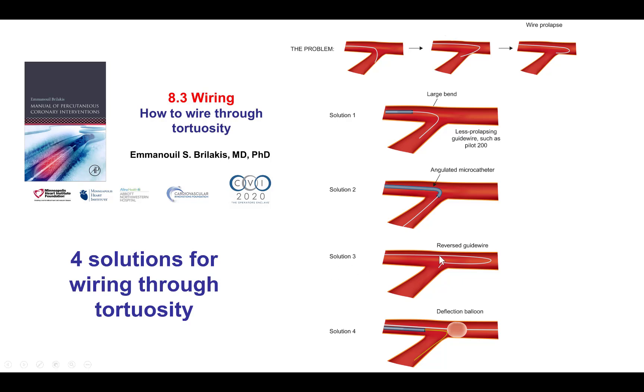Another option is to use the reversed guide wire technique, or hairpin guide wire, in which there is a bend in a polymer jacket about 3 cm from the tip.